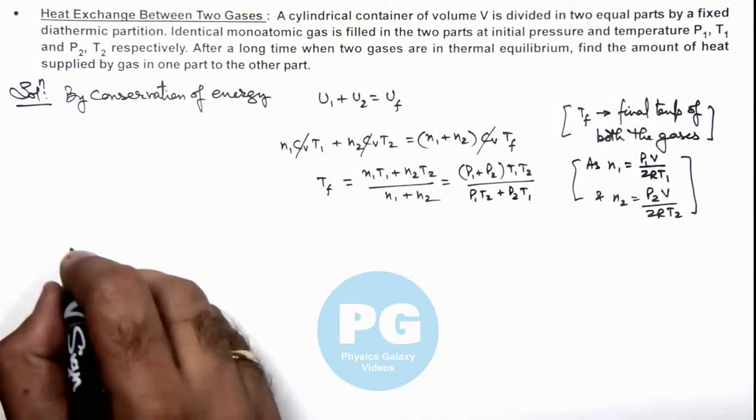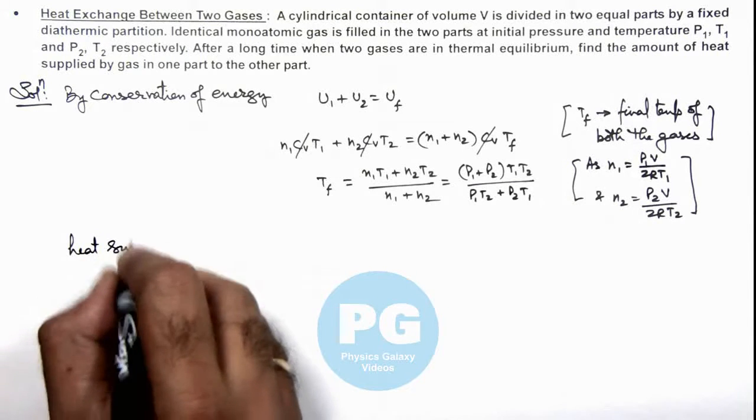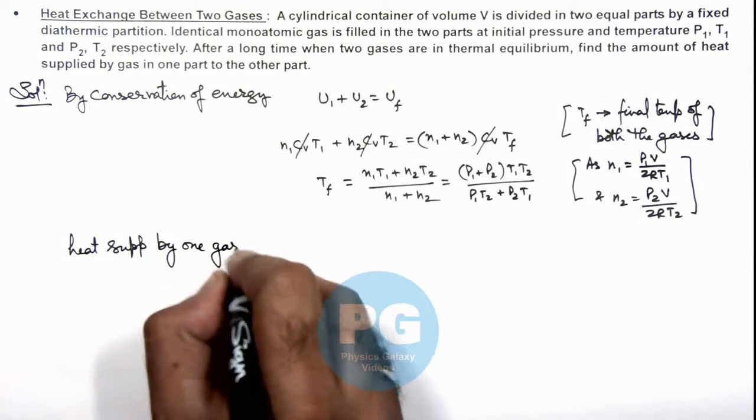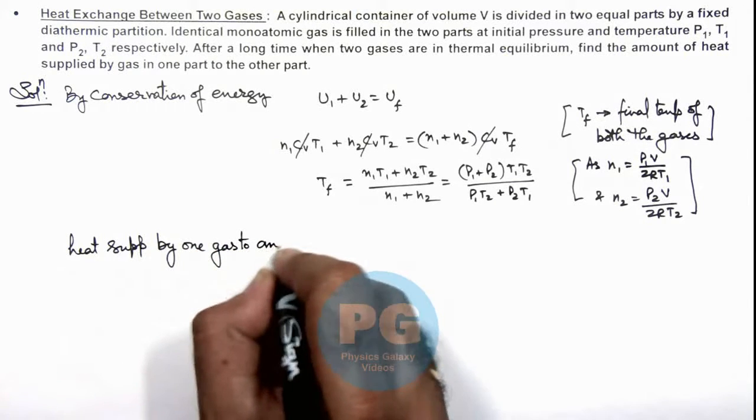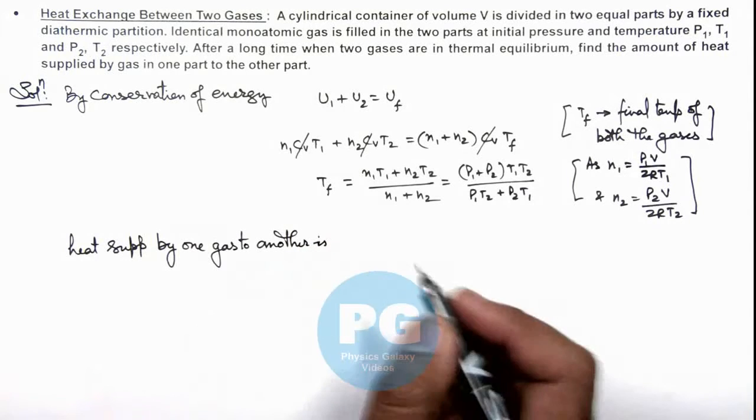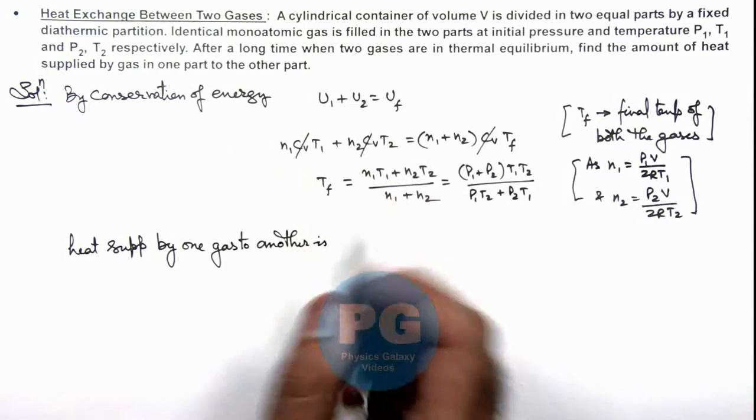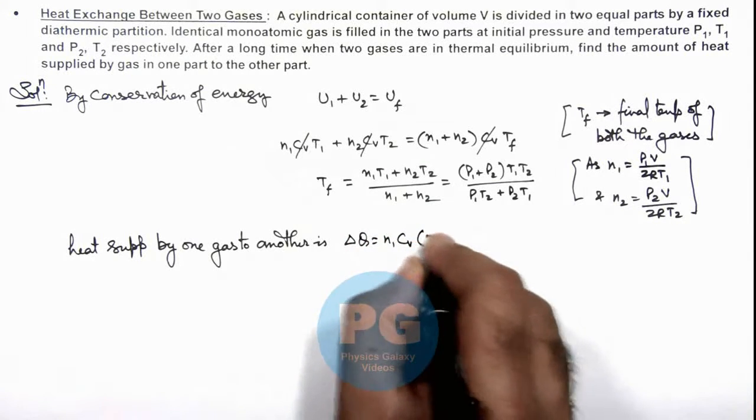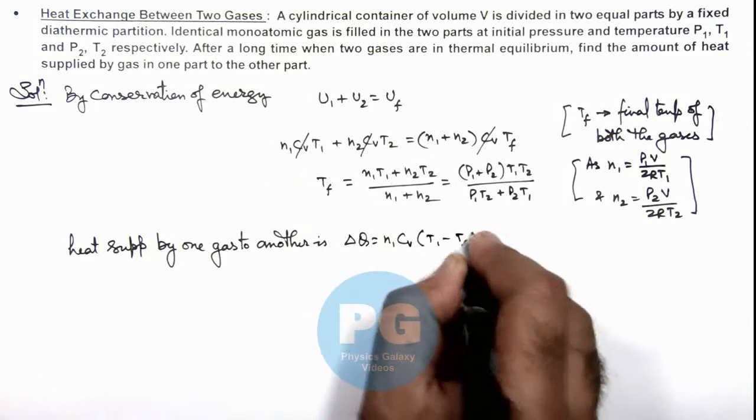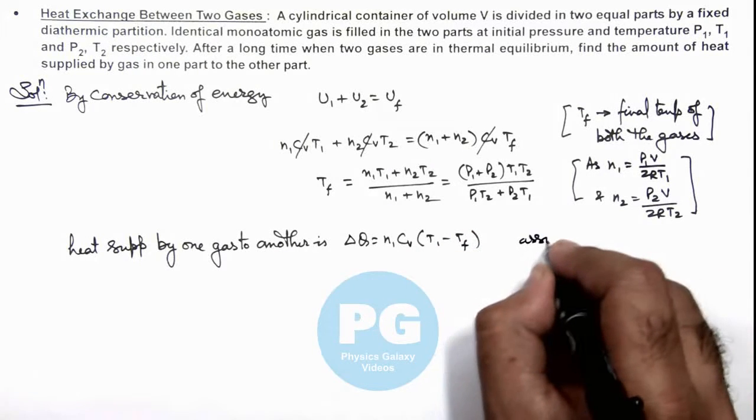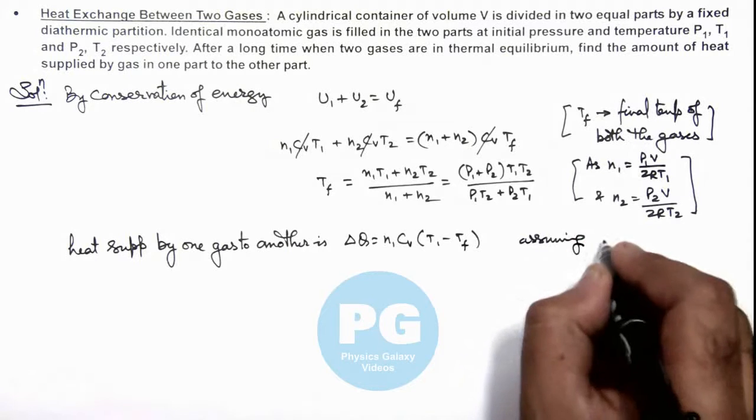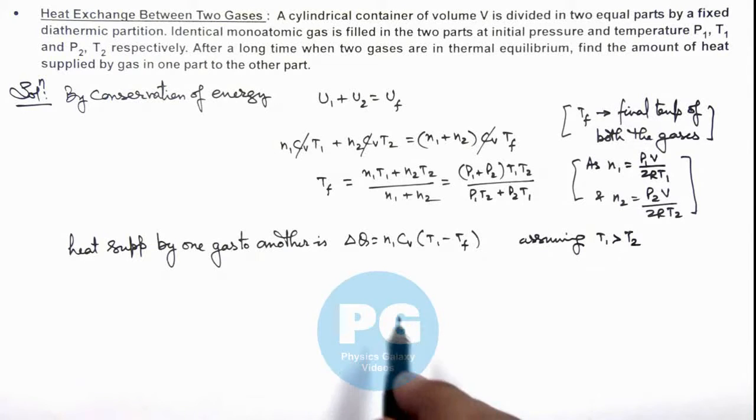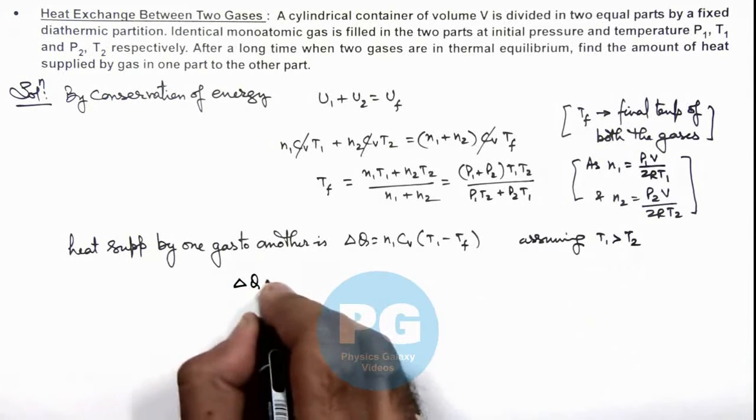Here we can consider T₁ is greater than T₂. Then we can write the heat supplied ΔQ as n₁Cᵥ(T₁ - T_f). Here we are assuming T₁ is greater than T₂, so heat will flow from first gas to the second one.